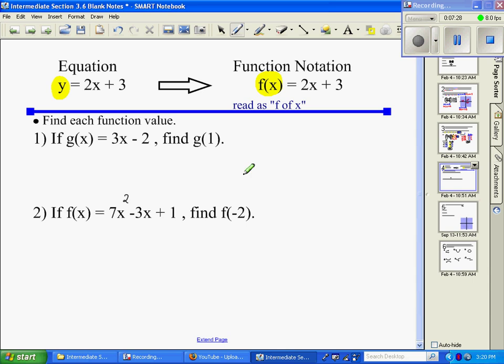So in the first one, we said if G of X, which it doesn't matter if it says P of X, F of X, H of X. It's just different variables. If G of X equals 3X minus 2, it says find G of 1. Well, G of 1, all it's really asking us to do is in the G function, substitute everywhere X is at with a 1. So basically what we need to do is write our equation. Everywhere X is at, we want to put in a 1. And then we're going to use order of operations to solve. So 3 times 1 is 3. 3 minus 2 is 1. So G of 1 equals 1. And that's pretty basic.